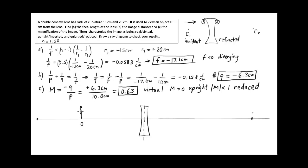The first ray is the central ray. It goes from the tip of the object straight through the center of the lens. At the center it's not refracted at all — it bends a little at the first surface and an equal amount at the back surface, emerging with no net deflection. Drawing that through the center of the lens, it keeps on going. That is the central ray.